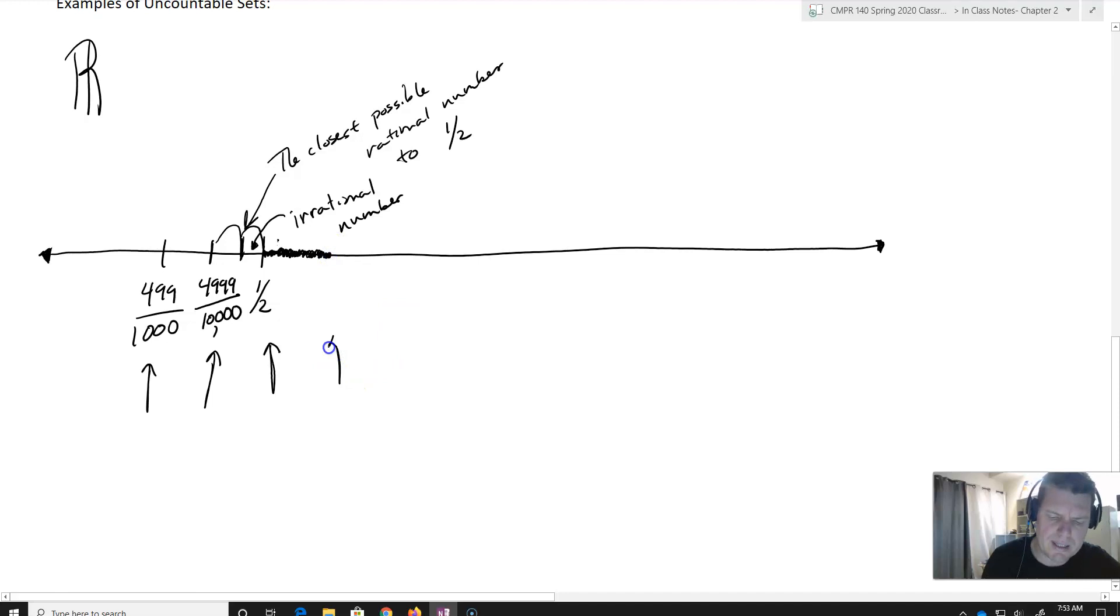So the real number line is continuous. And that's what makes the real numbers uncountable. The real number line is continuous. So R is uncountable.